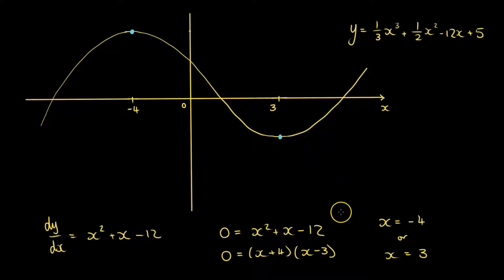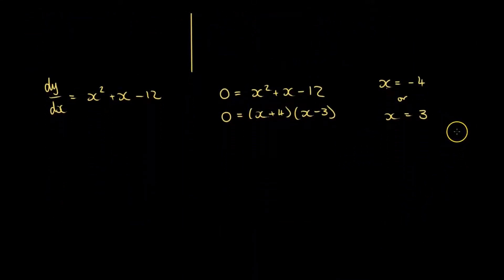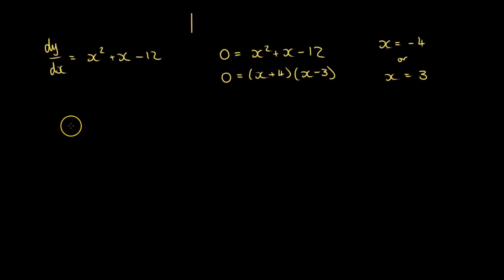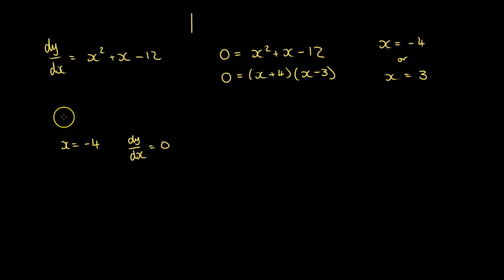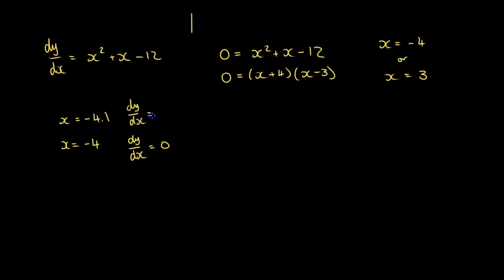There are two ways of going about this. The first way is testing points to the left and to the right of the local maxima or minima. Let's start off with x equals minus 4. We know at that point the gradient is going to be equal to zero. What about a point slightly to the left of minus 4 — so slightly more negative — like minus 4.1? Let's put that value into our function for the gradient, and we get a value of 0.71.